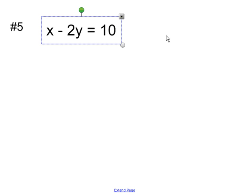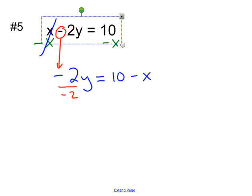So remember, my first step was to put the x over. So I'm just going to subtract it over on both sides. All right, and now the x's are gone, and I have negative 2y equals 10 minus x. Be careful with this negative sign. Sometimes it gets lost. Make sure you carry it down, and then you divide each side by negative 2.